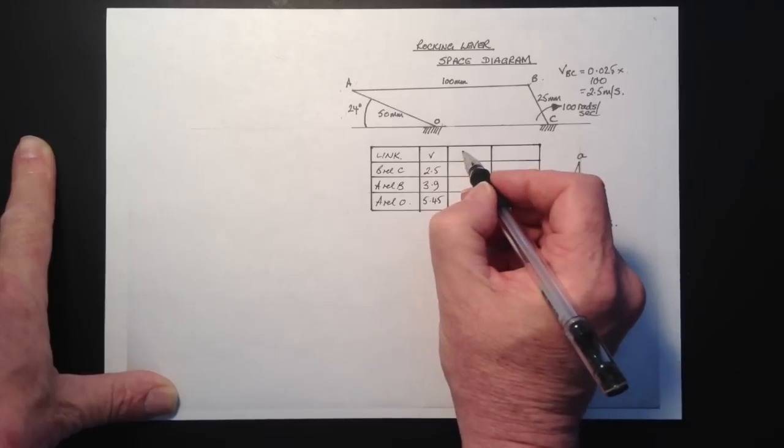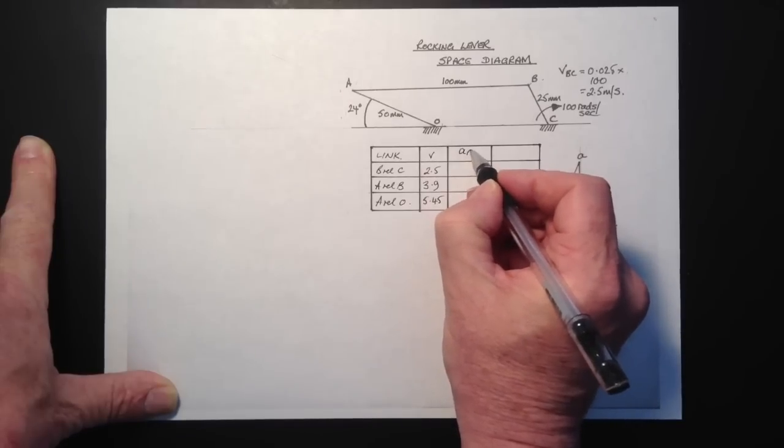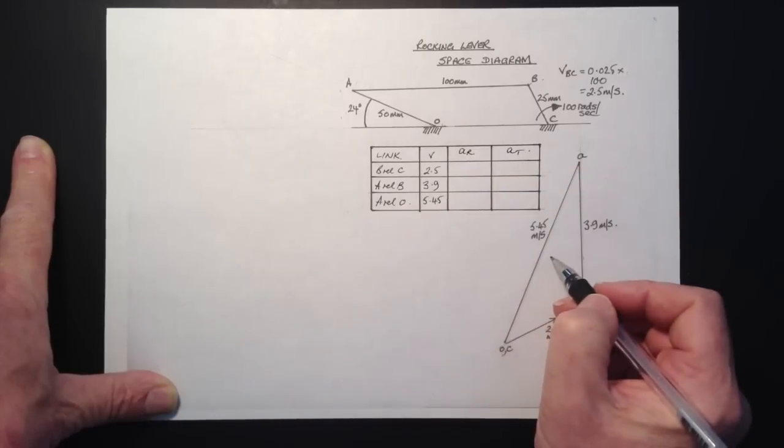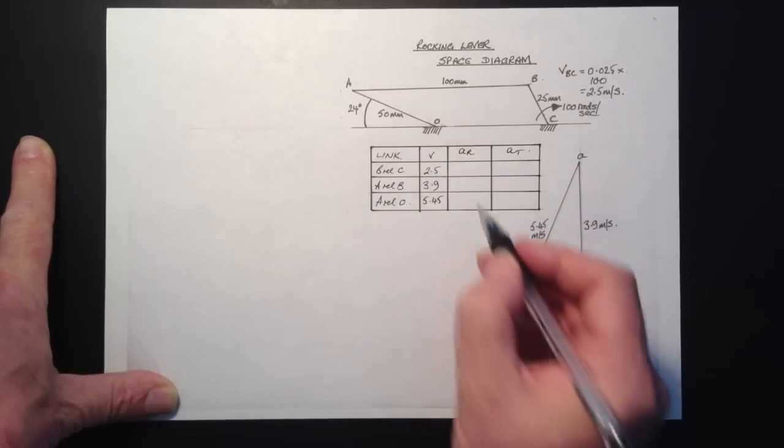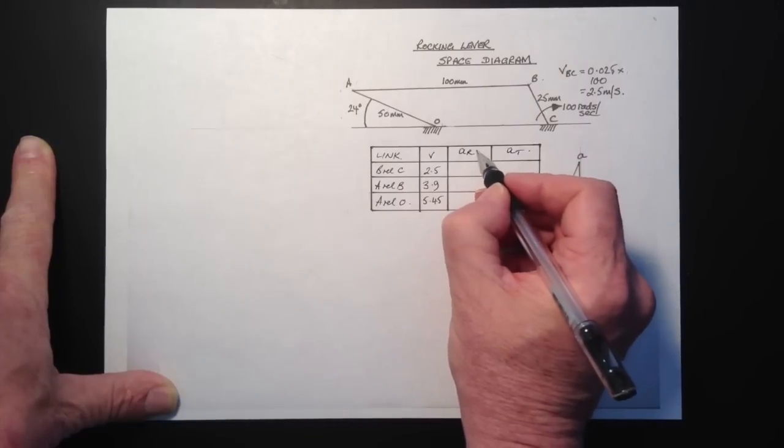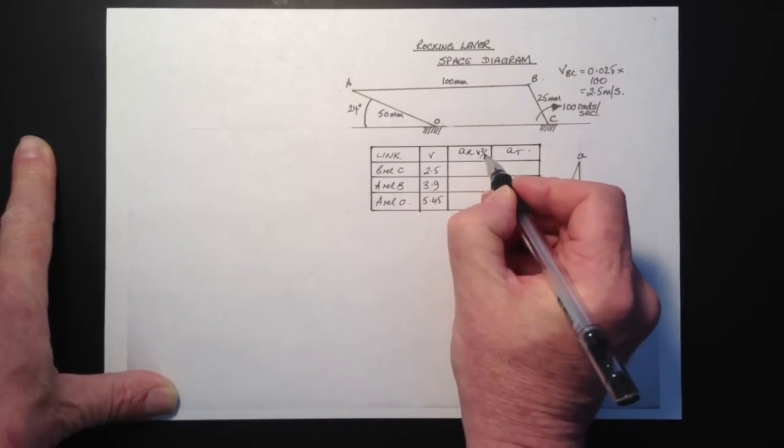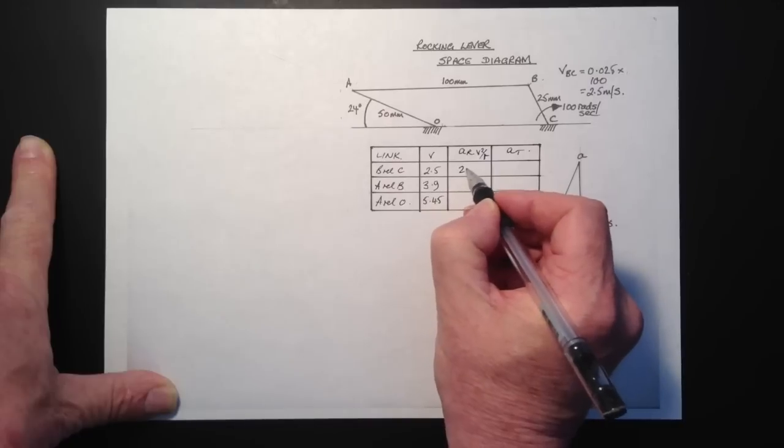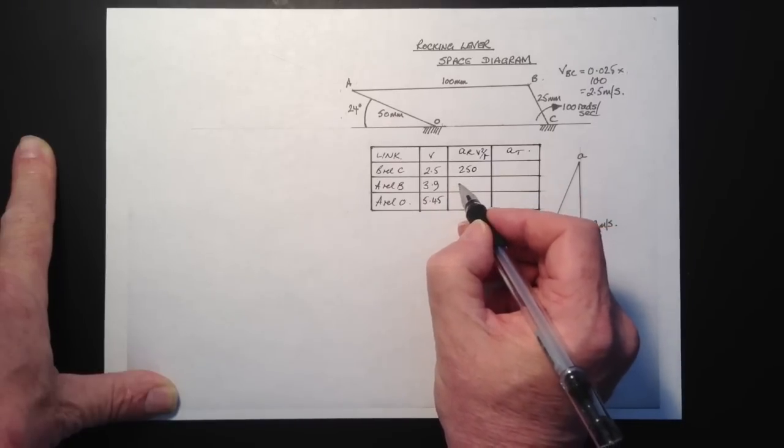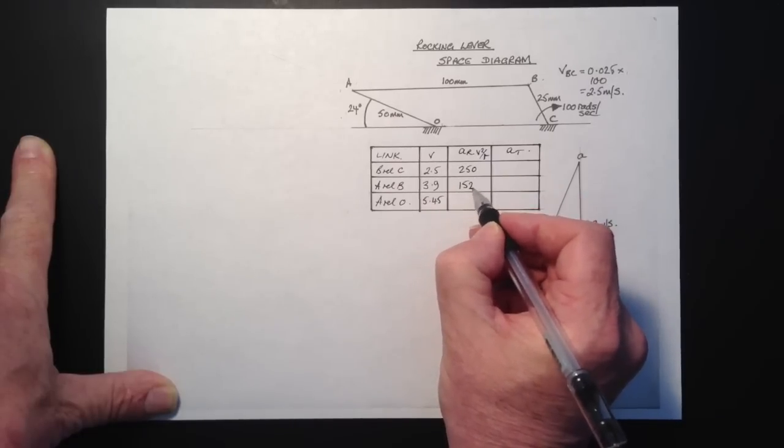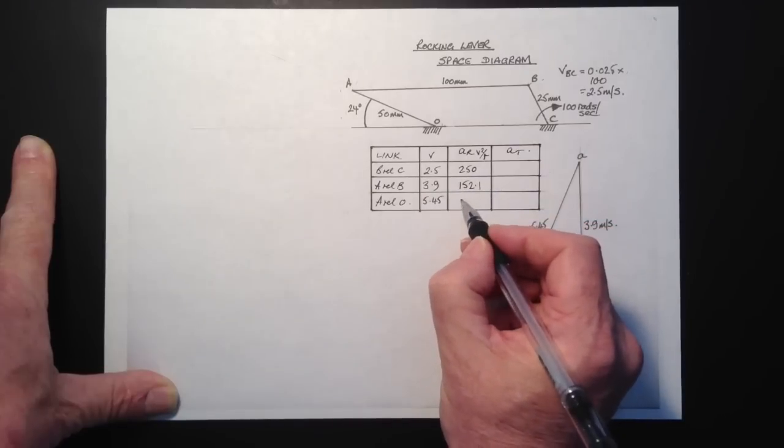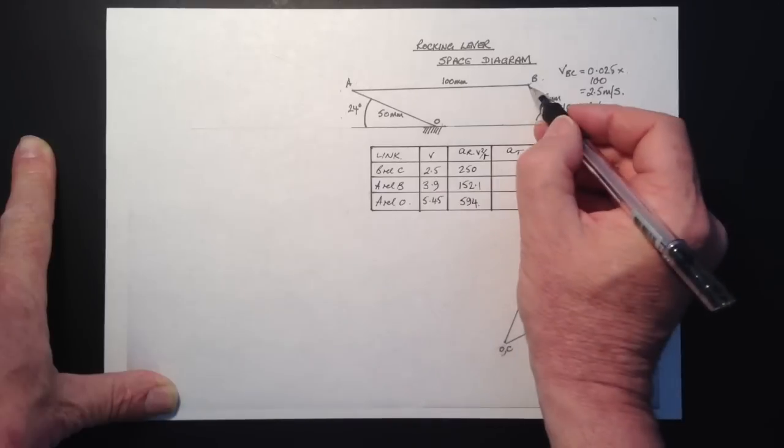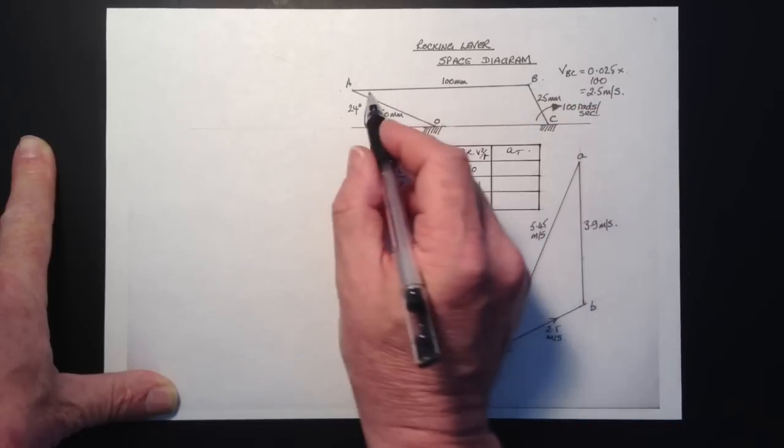Next we're going to put down what we know about acceleration. So we've got two components, radial and tangential. Now the radial component is given by V squared over R. And so we can work that out for each of these using V squared over R and the velocities taken from the velocity diagram.